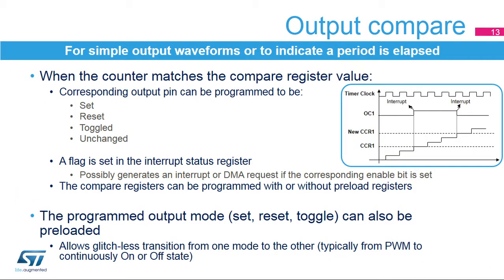This slide presents the output compare features. A compare event is generated when the counter matches the value of the compare register. This event can trigger an interrupt or DMA request and can be reflected on the corresponding output pin by an output set, output reset, or output toggle. The compare register can be preloaded. The preload must be disabled if multiple compare values must be written during a counting period. On the contrary, the use of preload mode must be preferred for applications with real-time constraints since this gives a higher time margin for the software to update the compare register with the next value. The transfer from the preload to the active value is triggered by an update event when the counter overflows or underflows. The output compare mode can also be preloaded so as to allow glitchless transition from a PWM mode to a forced on or off state, for instance.